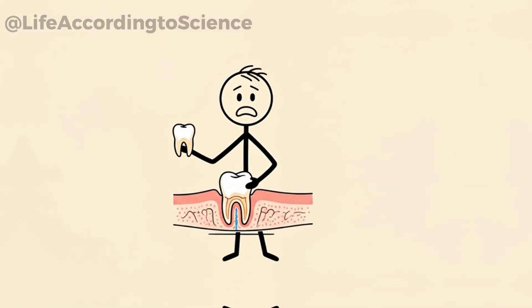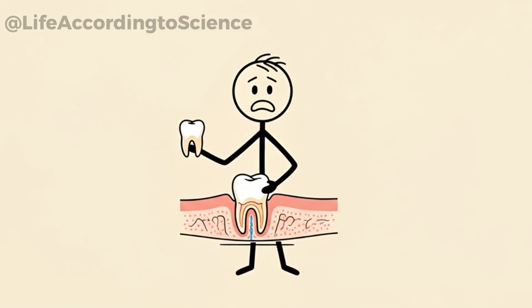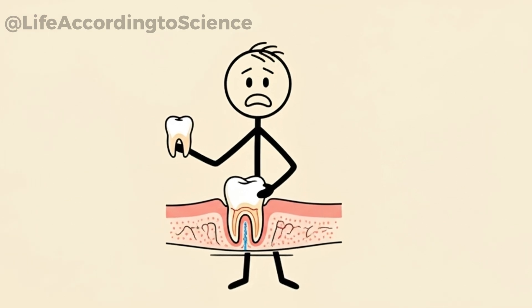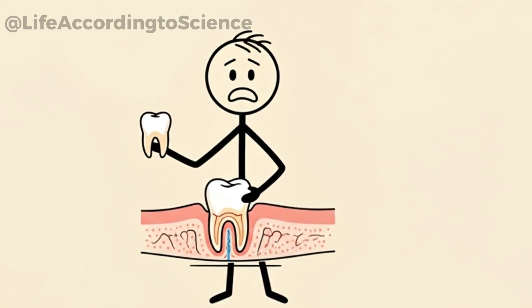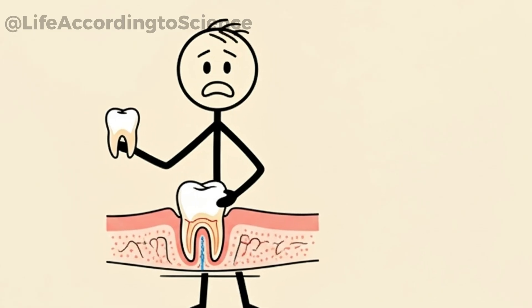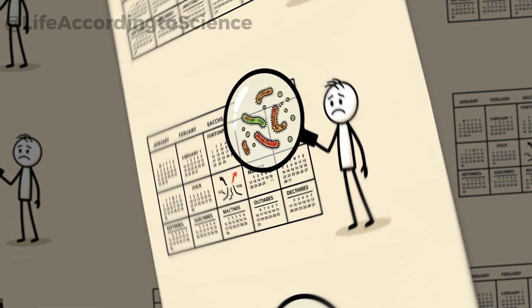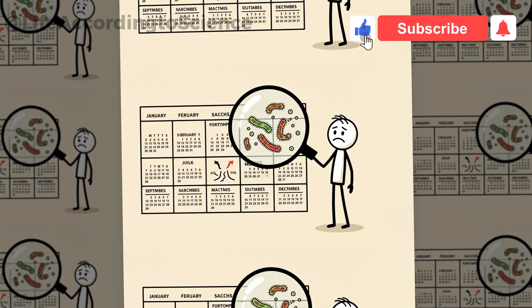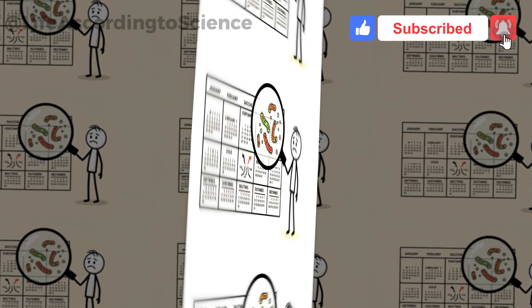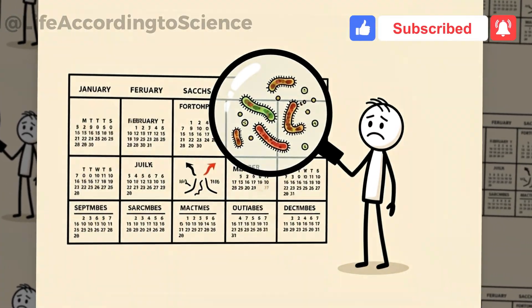As the bone deteriorates, teeth become loose, shifting positions, and eventually falling out. This process is slow but relentless once it begins. Six months without brushing accelerates this shift because tartar buildup and bacterial colonies grow stronger every week.